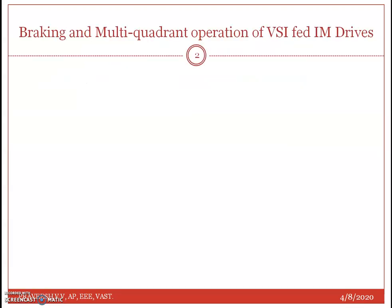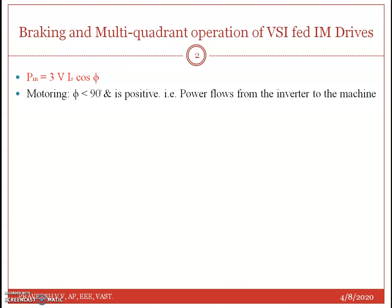Now we will be discussing more about the braking and multi-quadrant operation of VSI drives, and also closed loop speed control. The power input is given by 3·V·Is·cos(φ), where V is the fundamental component of the motor phase voltage, Is is the fundamental component of the motor phase current, and φ is the phase angle between V and Is. For motoring operation, φ will be less than 90 degrees and power flows from the inverter to the machine.